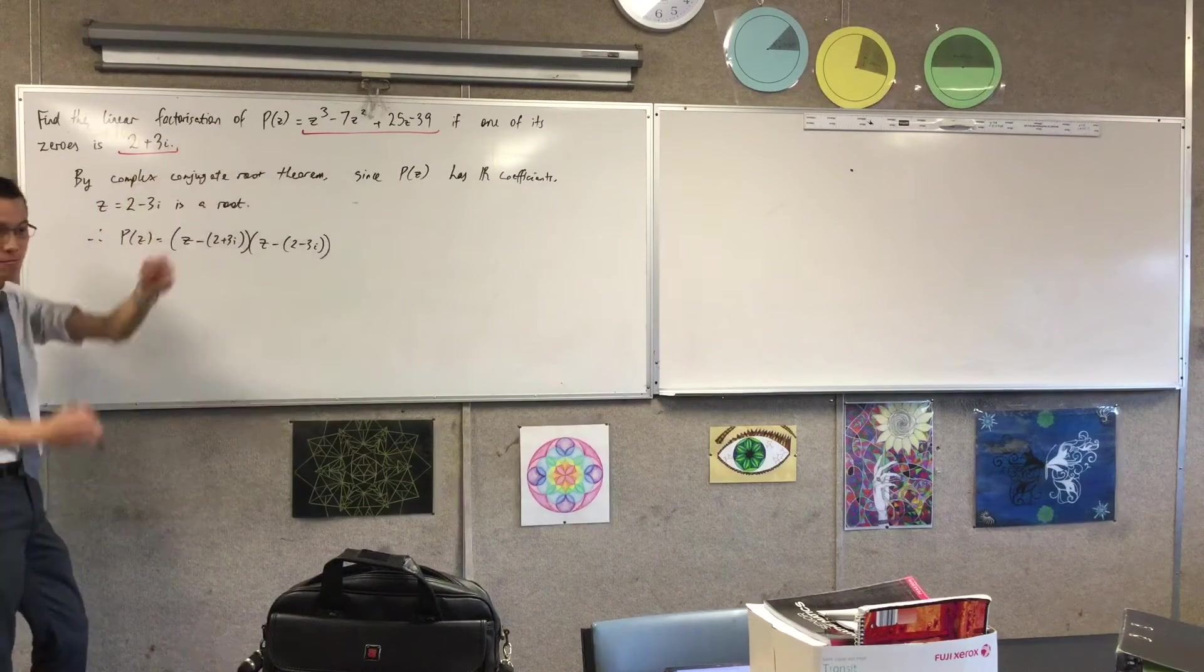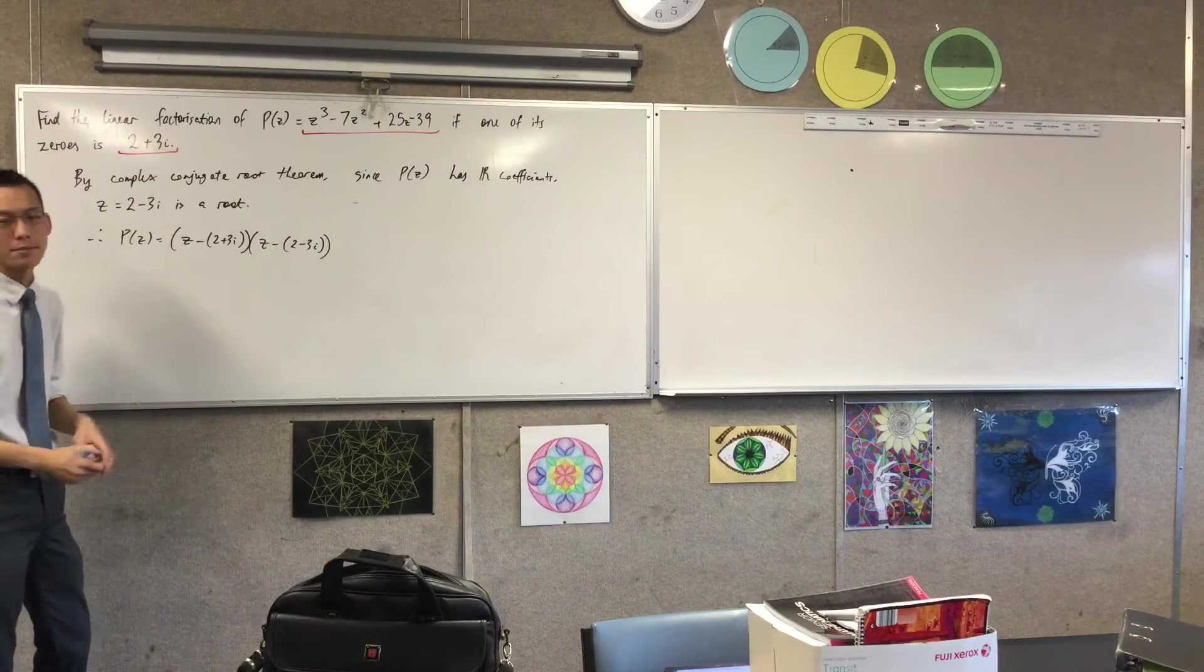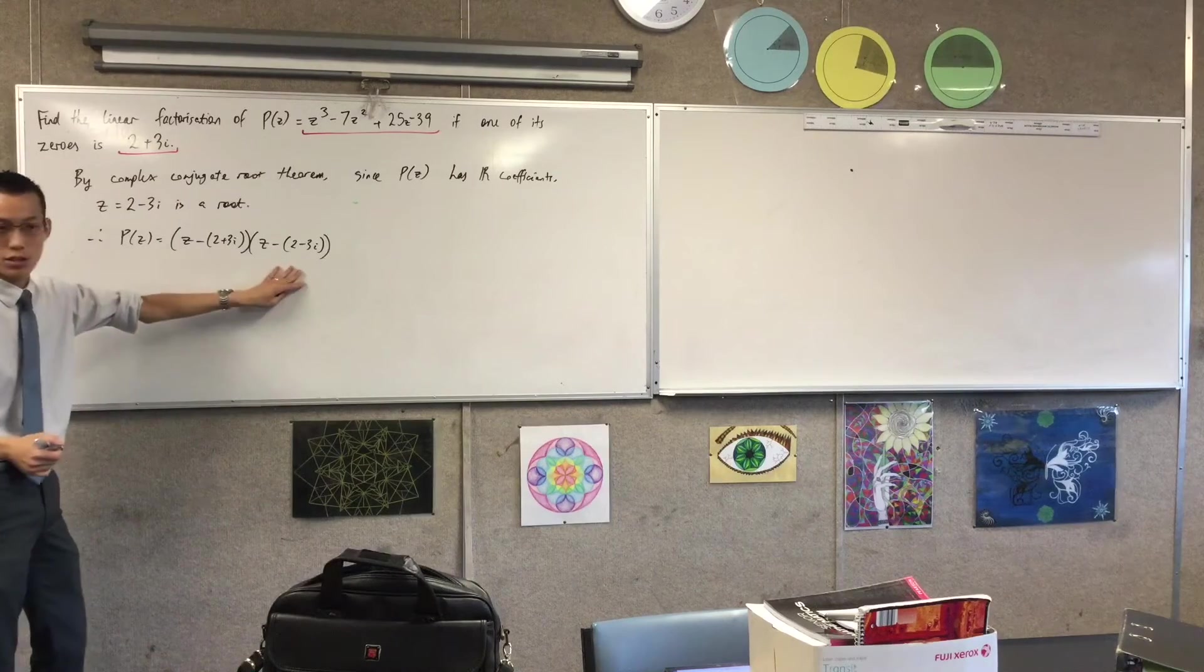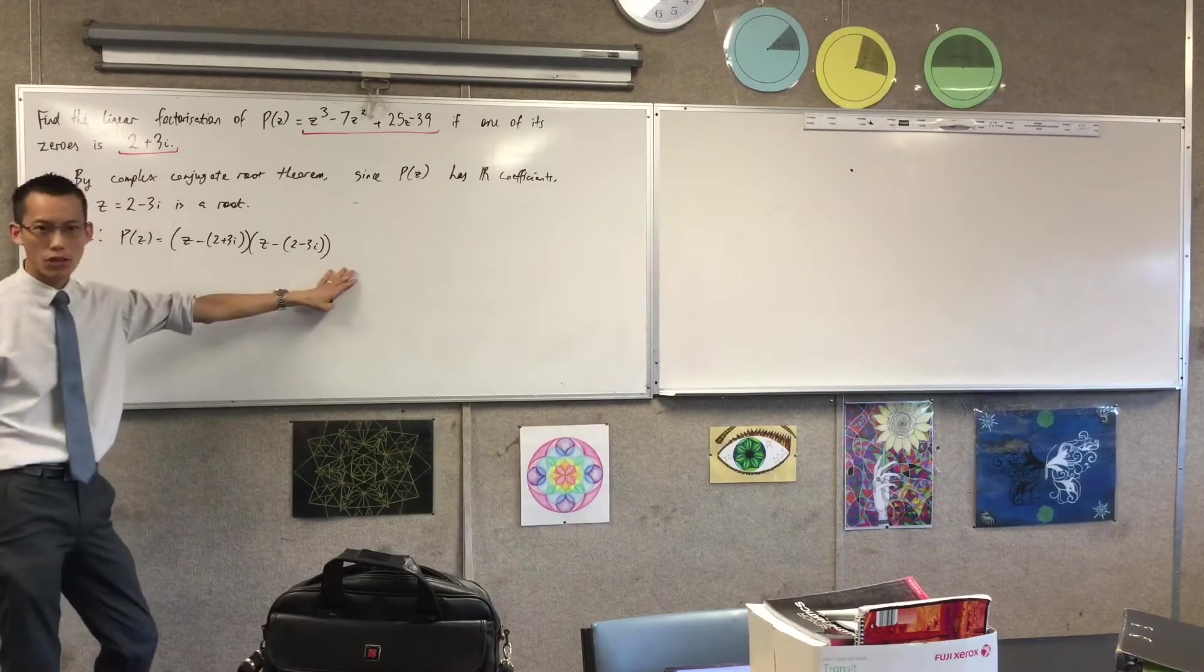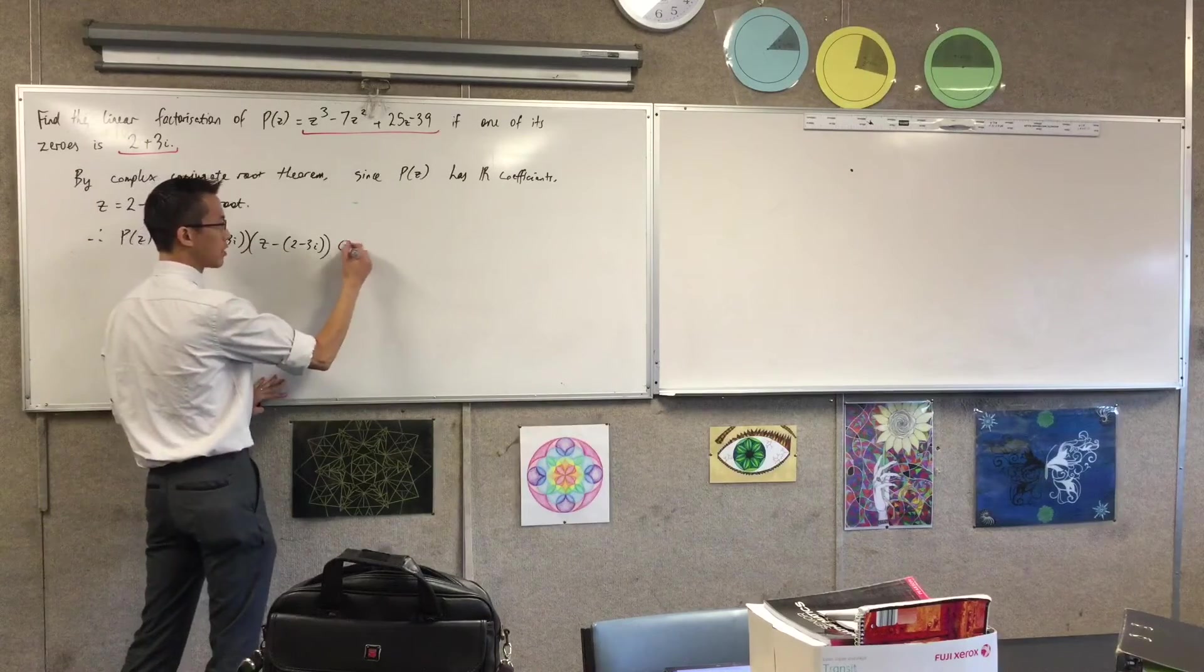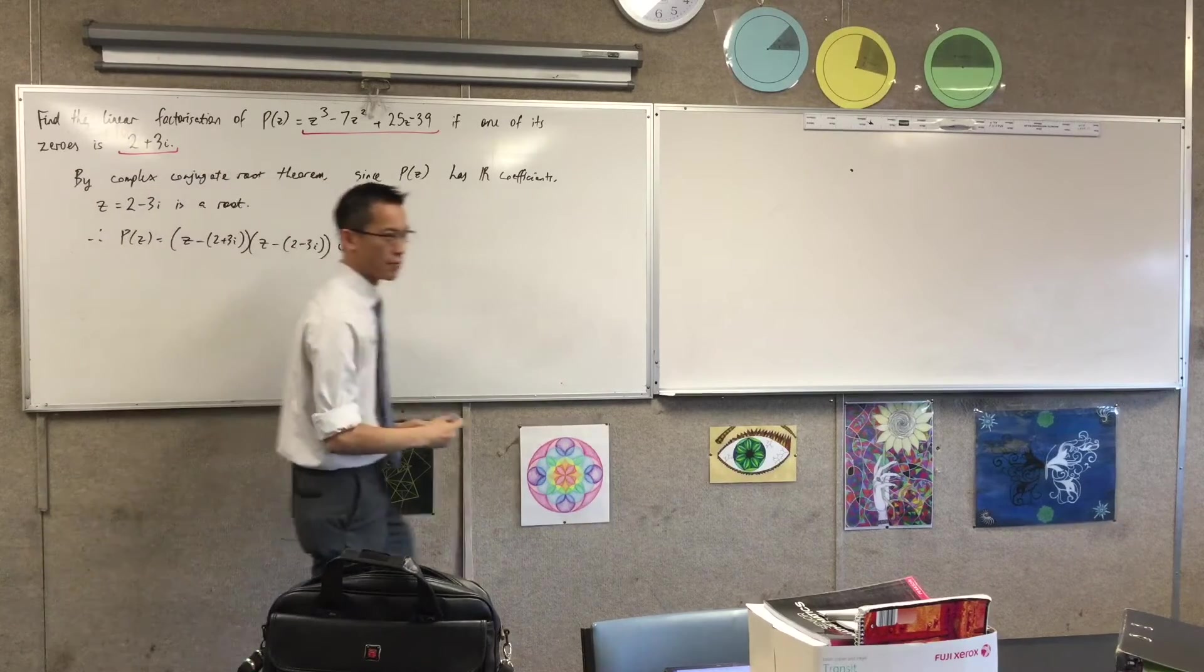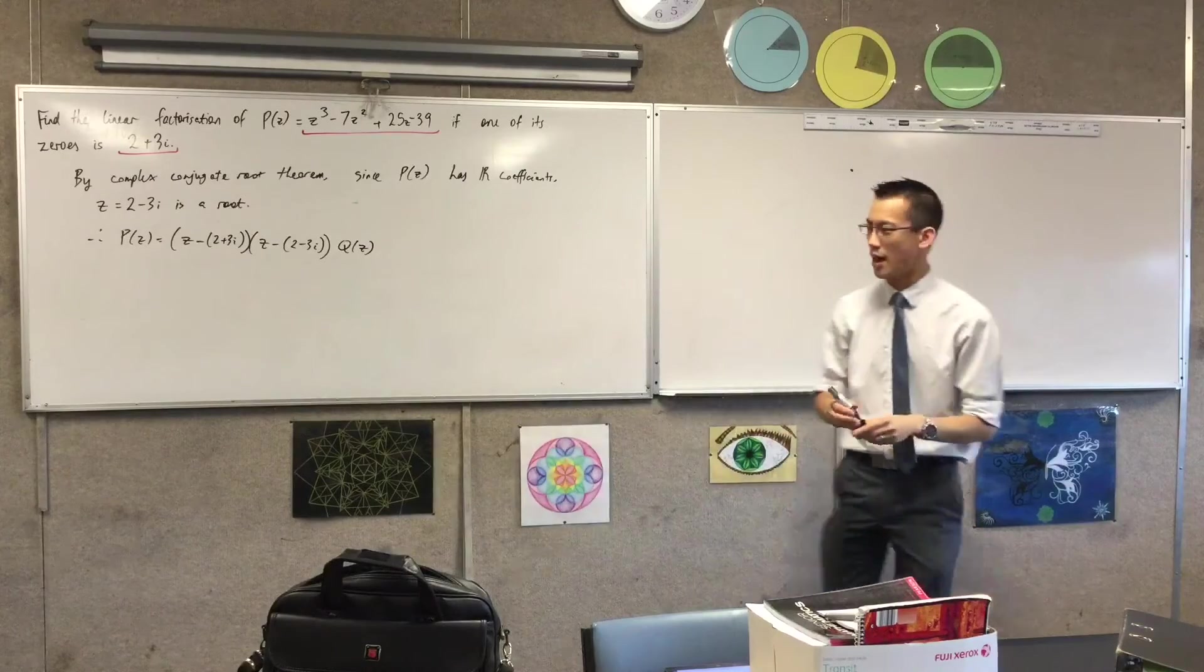You can't actually just sub 2 plus 3i into the equation because it's a linear factor. I can, but it won't give me anything useful. All it will tell me is zero according to the factor theorem. It will just say yep, it's right. That's all it will tell me. So there's the first two factors that I already know. I don't know what the other factor is, I'm just going to call it Q, partly because I already have P.